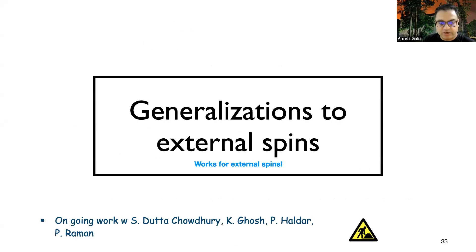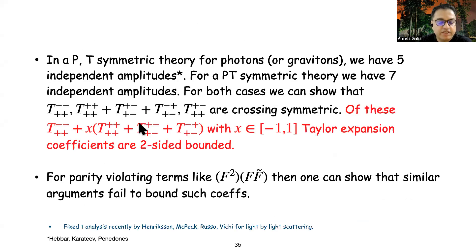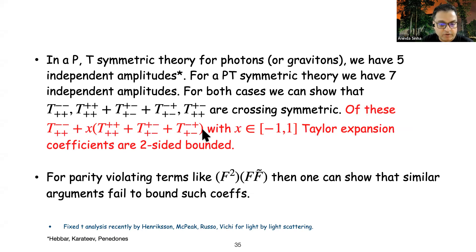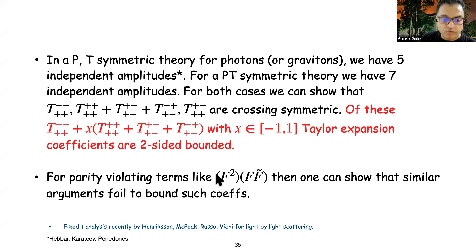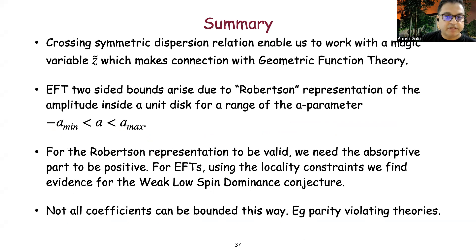There is a generalization to external spins, building on an idea given by Roskies in 1970: any arbitrary function can be expanded in crossing-symmetric pieces. We consider which combinations of amplitudes give rise to a Robertson representation and then apply theorems from geometric function theory. For example, certain combinations turn out to be two-sided bounded, agreeing with the recent analysis by Hendrickson and collaborators. For parity-violating terms, these techniques don't work—we cannot bound the coefficient of such terms in an effective field theory.